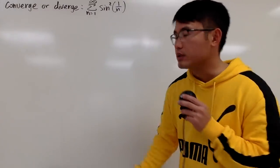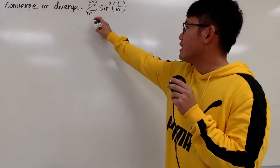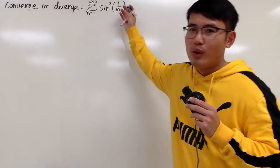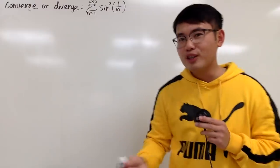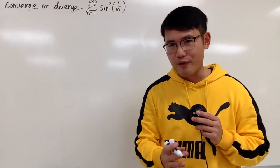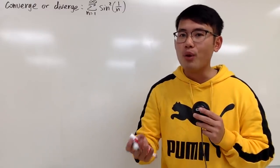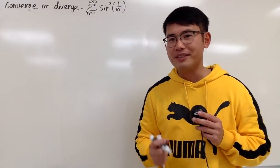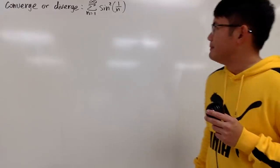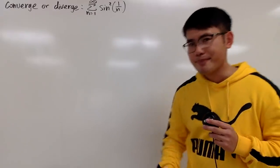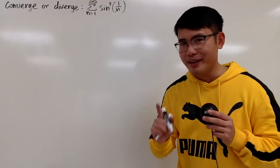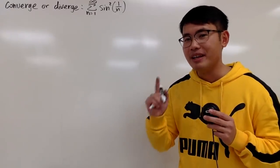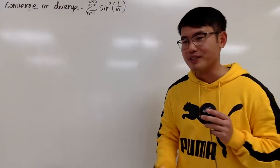Let's find out if the series as n goes from 1 to infinity of sine squared of 1 over n converges or diverges. Of course, we will also have to provide the reason. We cannot go wrong by first trying the test for divergence.